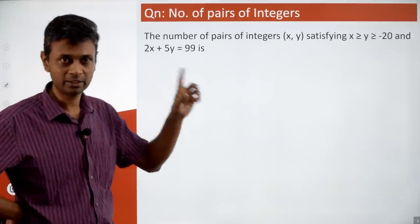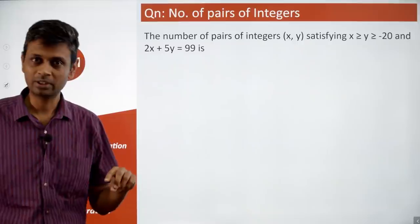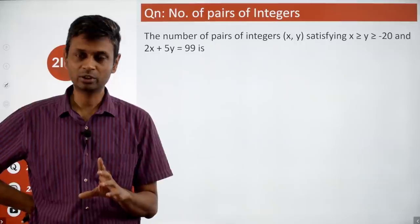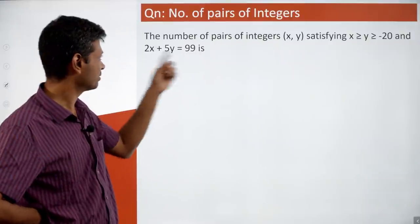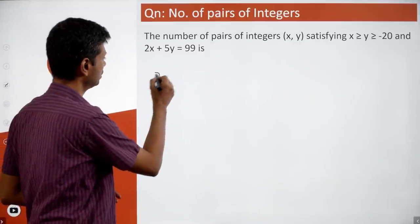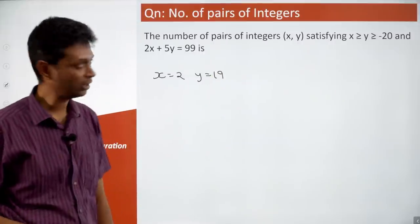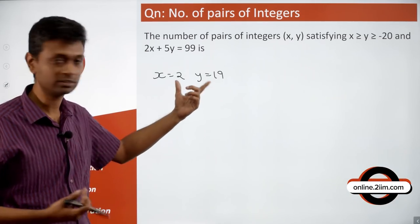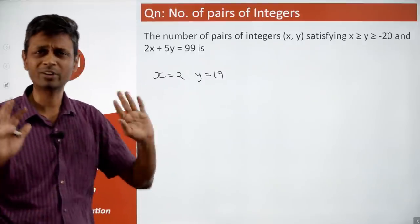2x + 5y = 99. 2x is even, so subtract an even number from 99 to get an odd multiple of 5 for 5y. The best case: y = 19 gives 5y = 95, so x = 2. So (x, y) = (2, 19) is one solution — though it doesn't satisfy x ≥ y yet.